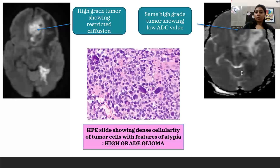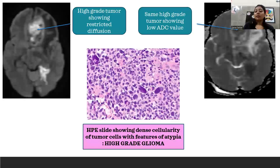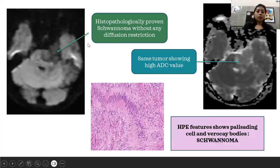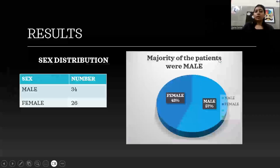We can see one tumor — a high-grade glioma diagnosed histopathologically — showing densely packed cells with severe atypia. That tumor showed high diffusion restriction on DWI with a corresponding low ADC value. Another tumor, histopathologically proven schwannoma, showed low diffusion restriction with a high ADC value.